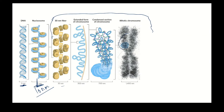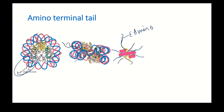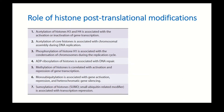The amino terminal regions of histones protrude out — these are the amino terminal tails of core histones. They contain the basic amino acid lysine with its epsilon amino group protruding out. This amino terminal tail contains basic amino acids, and the epsilon amino group protrudes further.